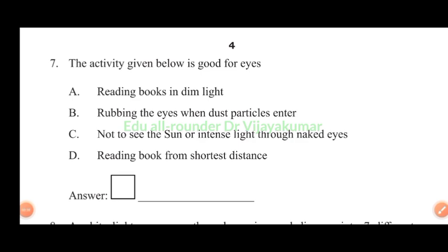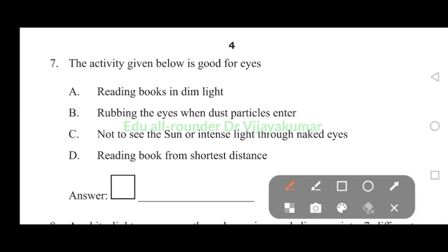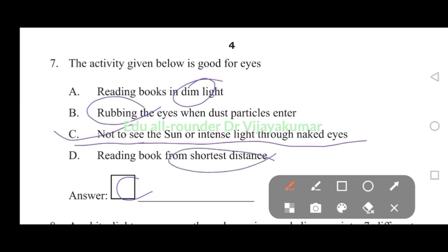The activity given below is good for eyes. There are three activities which are bad for eyes, one is good for eyes. Which is good for eyes? Not to see the sun or intense light through the naked eyes - it is good for eyes. Other three are reading book in dim light, bad; rubbing the eyes, bad; reading book from shortest distance, these are all bad. Therefore, answer C is not to see the sun. That is good for eyes.